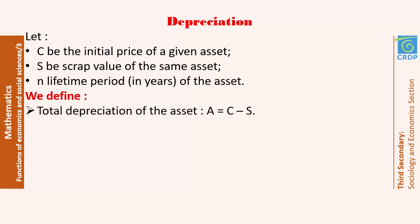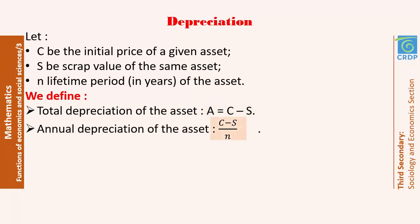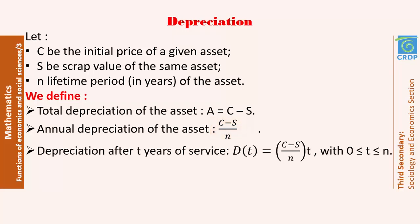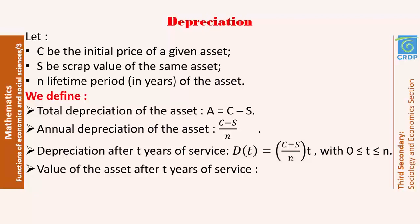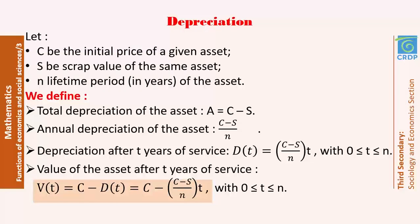The total depreciation of the asset is A = C − S. The annual depreciation is (C − S) / N, which is the value this asset loses from its initial price per year of service. The depreciation after T years of service is D(T) = [(C − S) / N] × T. The value of the asset after T years is V(T) = C − D(T) = C − [(C − S) / N] × T.